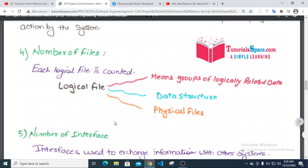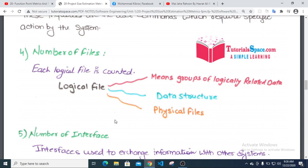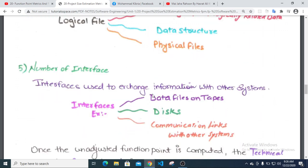Number of files: Each logical file is counted. Logical files do not equal physical files. File means a group of logically related data. Number of interfaces: These are the interfaces used to transfer data to other systems.